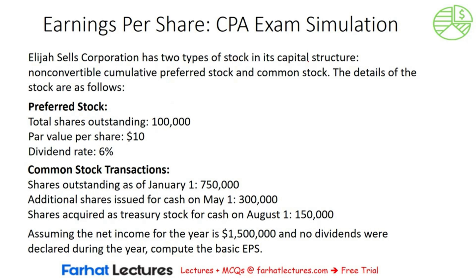Elijah Sales Corporation has two types of stock in its capital structure: non-convertible preferred stock and common stock. Non-convertible preferred stock means that it is not a convertible security — it may not be converted to common stock, so it's not going to have any effect on the computation of the diluted EPS. Cumulative preferred stock means that regardless of whether dividends were declared during the year, we're going to take into consideration the dividends accumulated during the period in the computation of the numerator of the basic EPS and the diluted EPS.